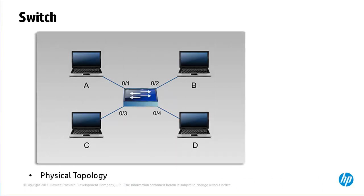Here's a simple topology to demonstrate the difference between the physical and logical topology. We're looking at the physical topology: we have a single switch and four PCs — A, B, C, and D. A is connected to port 1, B to port 2, C to port 3, and D to port 4. A very simple physical topology.